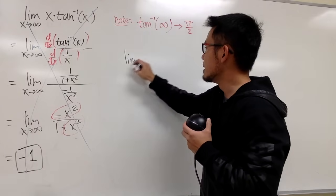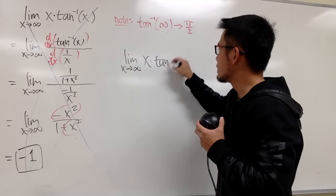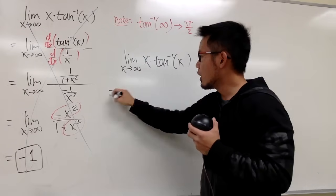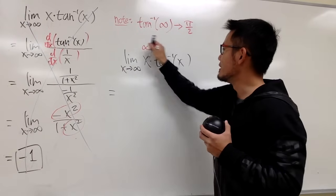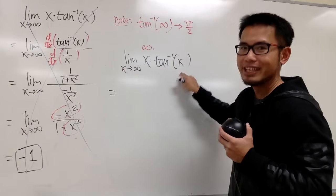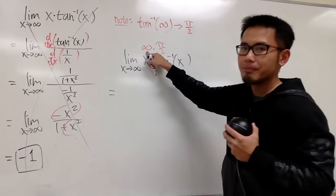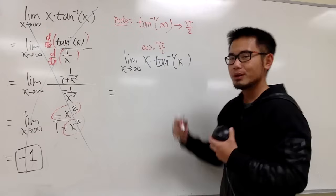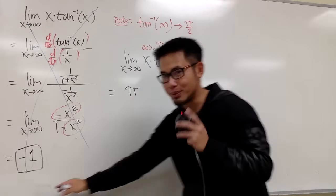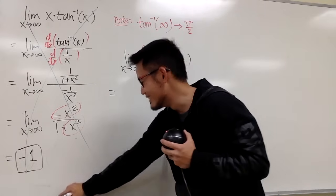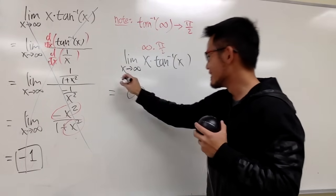So this is how we are going to do it. The limit as x goes to infinity of x times inverse tangent of x. We just have to recognize that this is infinity times pi over 2. And infinity times a positive finite value is still infinity. So you can draw a conclusion right away — the limit is infinity.